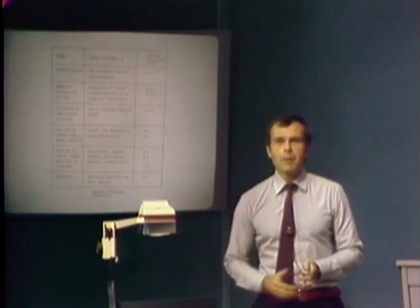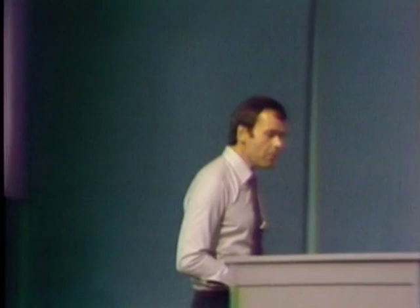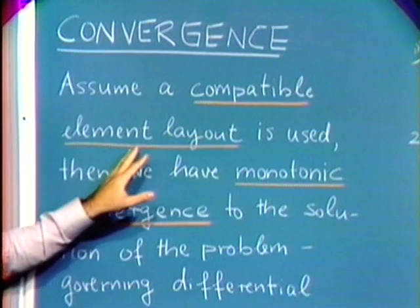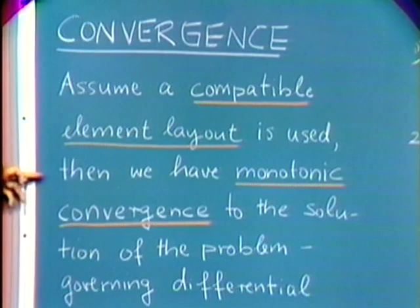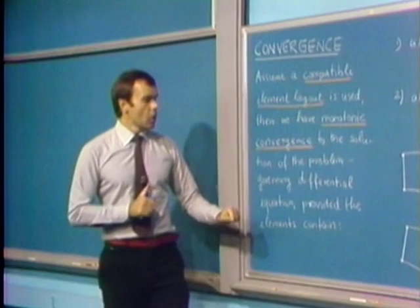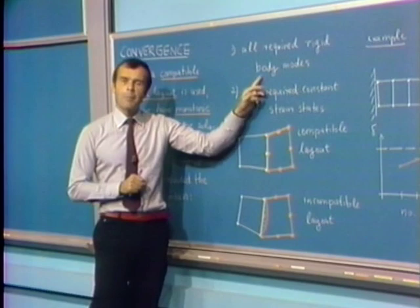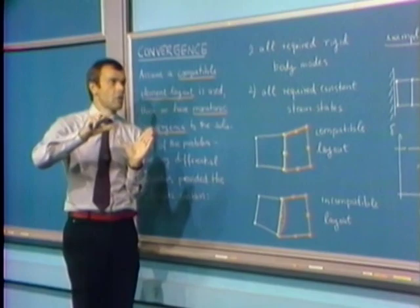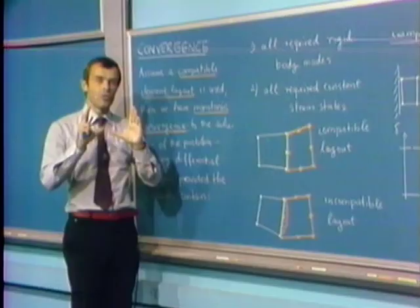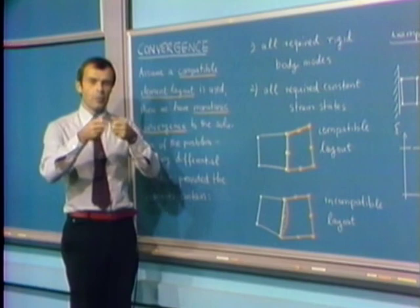For the discussion of convergence, I assume all errors except discretization errors are negligible — exact integration, infinite-precision machine, and so on. If we have a compatible element layout, we have monotonic convergence to the solution of the governing differential equations, provided the elements contain all required rigid body modes and can represent the required constant strain states. In plane stress, the element must be able to undergo three rigid body modes: two translations and a rigid body rotation.